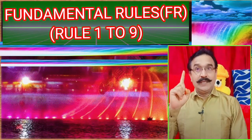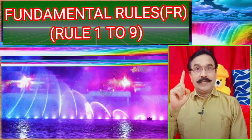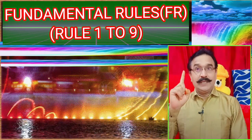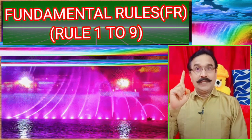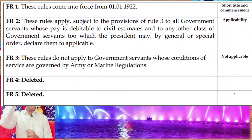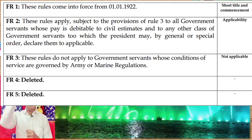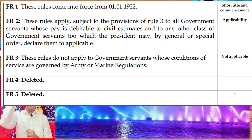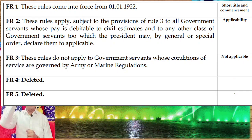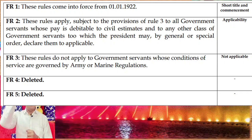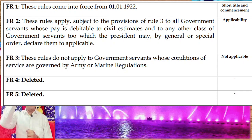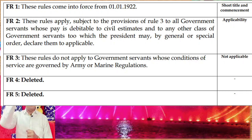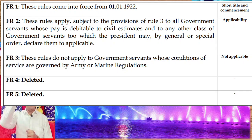We are now going to read Part 1 — discussing Fundamental Rules 1 to 9. Fundamental Rule 1 states: these rules come into effect from 1st January 1922 — very important, remember this. This is the short title and commencement. This rule applies, subject to the provisions of Rule 3, to all government servants whose pay is debitable to civil estimates.